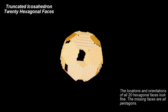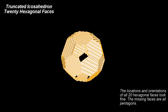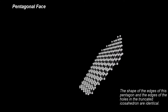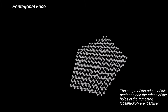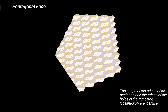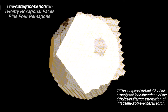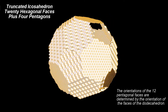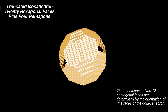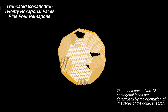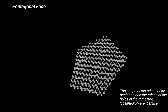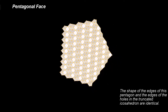The missing faces are all pentagons, as expected. The orientations of the 12 pentagonal faces are determined by the orientation of the faces of the dodecahedron. Let's add 4 pentagonal faces first. Let's have a look now at a pentagonal face used in our investigation of the dodecahedron. Pay closer attention to the shape of the edges of this pentagon and the edges of the holes in the truncated Icosahedron.